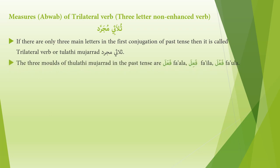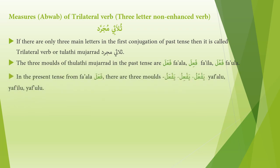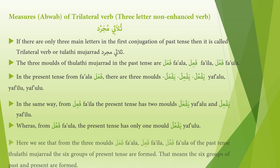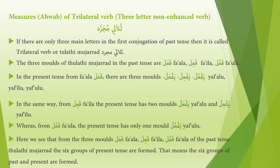The three modes of thulathi mujarrad in the past tense are: fa'ala, fa'ila, and fa'ula. In the present tense from fa'ala there are three modes: yaf'alu, yaf'ilu, and yaf'ulu. From fa'ila in the present tense there are two modes: yaf'alu and yaf'alu. Whereas from fa'ula the present tense has only one mode: yaf'ulu. From these three past tense modes, six groups of present tense are formed.